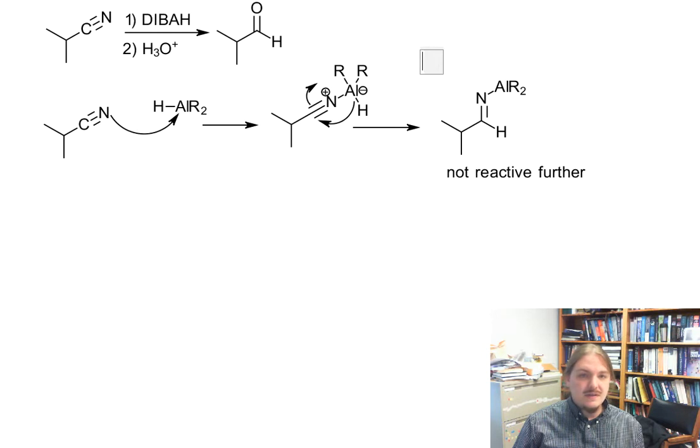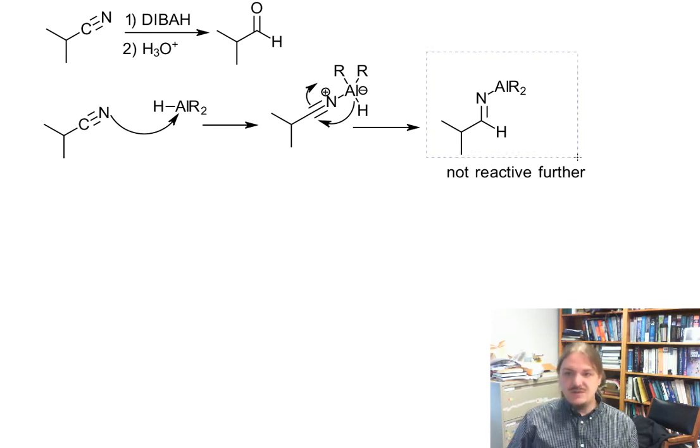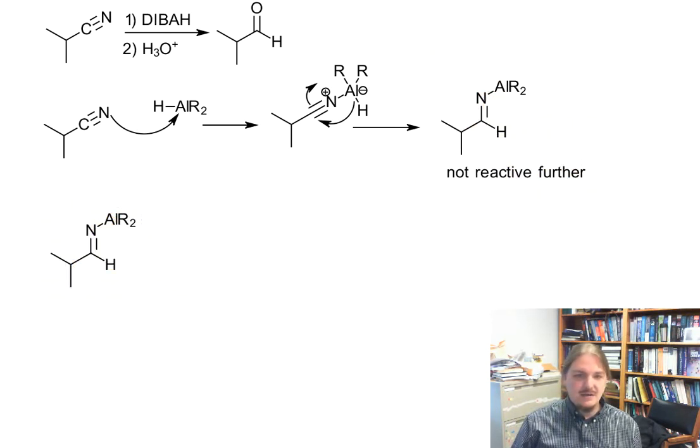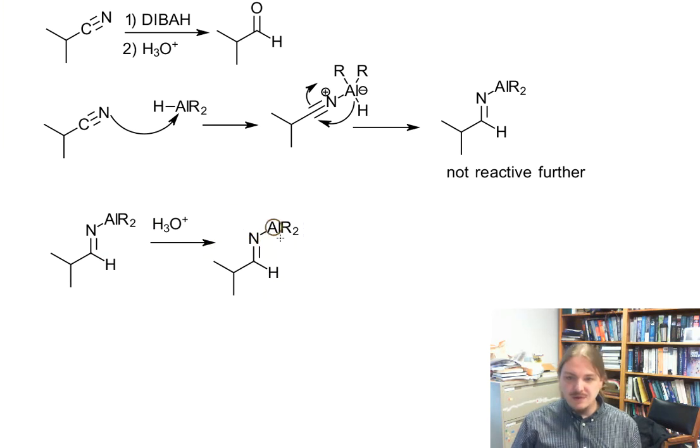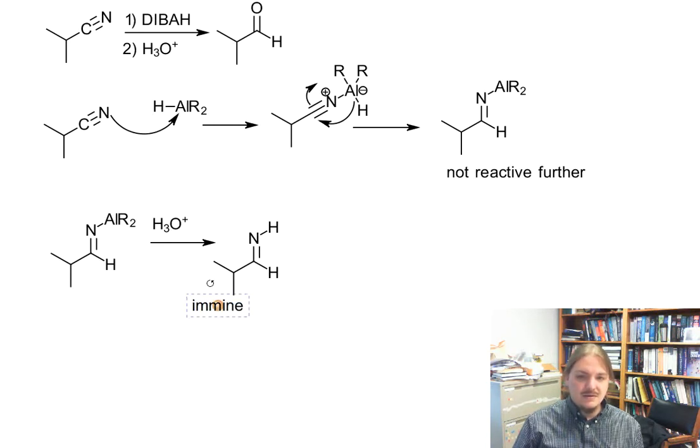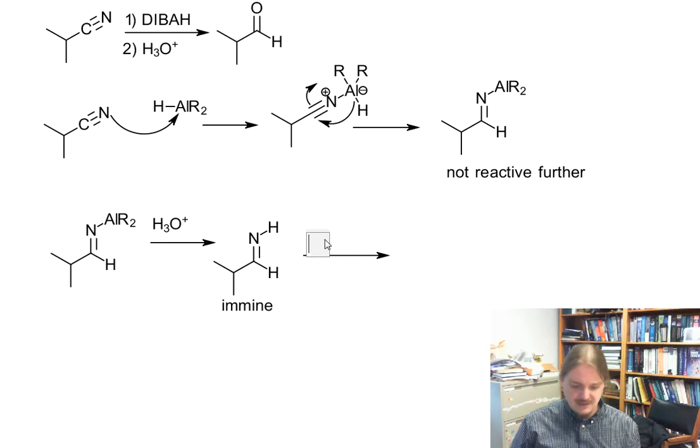Let's leave that up here. And so once you add acid to the reaction, it protonates this intermediate, gets the aluminum off there, converts this into a hydrogen. Now you have an imine, and imines undergo hydrolysis in aqueous acid to form aldehydes. So this is how this works.